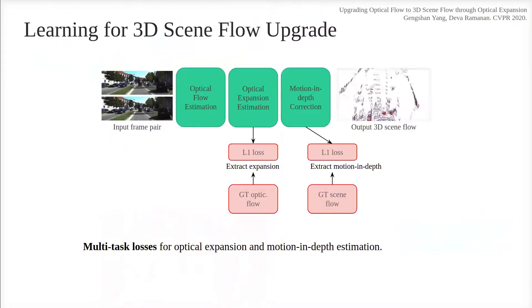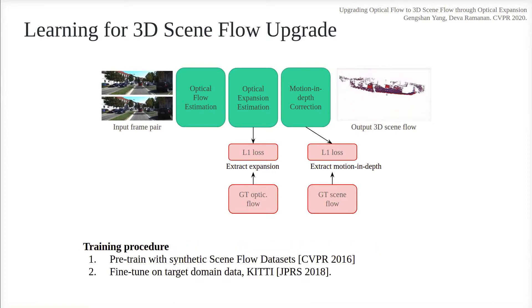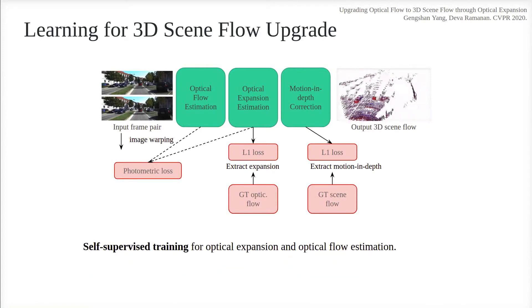The networks are trained jointly with a multi-task L1 loss, with existing optical flow and scene flow datasets. When ground truth flow is not available, the expansion network can also be trained with photometric loss.